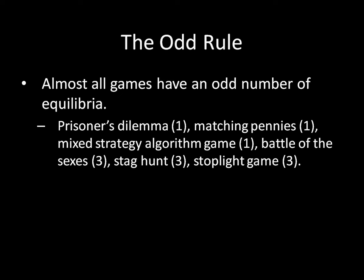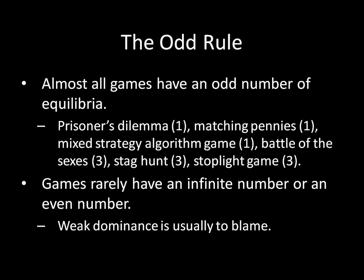So if almost all games have an odd number of equilibria, that means games rarely have an infinite number or an even number of equilibria, and weak dominance is usually to blame. In each of the last two videos on weak dominance and infinitely many equilibria, both of those games have an infinite number of equilibria and they also have a weakly dominated strategy. What we haven't seen yet is a game with exactly an even number of equilibria — not an odd number, not an infinite number, but exactly an even number.